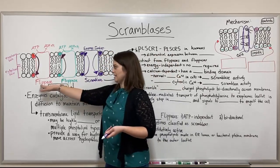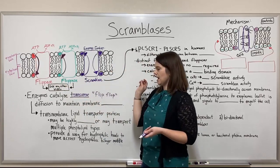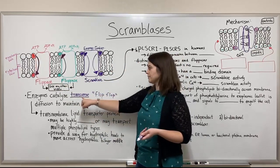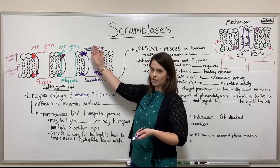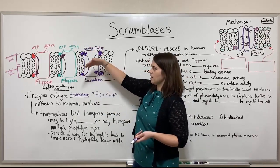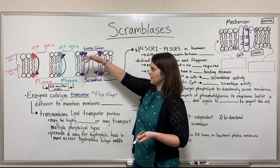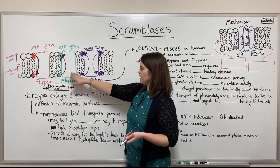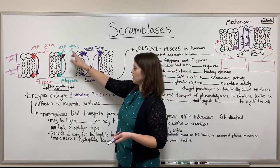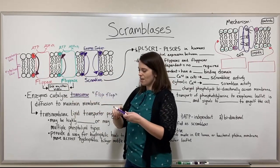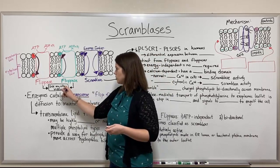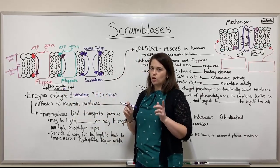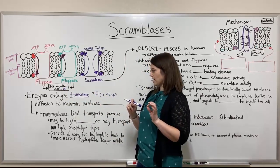What these enzymes do is catalyze flip-flop or transverse diffusion — that's moving from one face to another. Flip-ases move phospholipids from the exoplasmic face to the cytoplasmic face, while flop-ases move them from the cytoplasmic face to the exoplasmic face. I have another video that goes into flip-ases and flop-ases in a lot more detail, so be sure to check that one out.